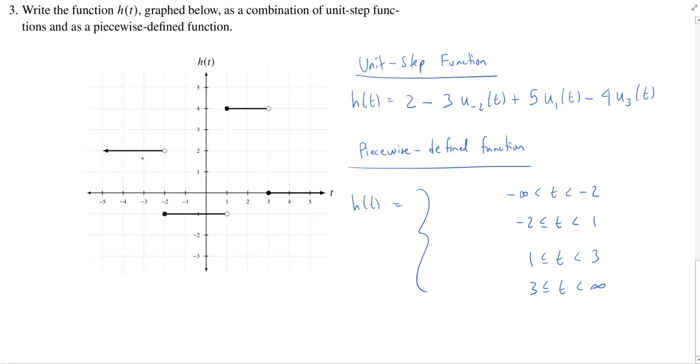Now it's just a matter of asking what are the values on these specific domains. So from negative infinity to negative 2, the output is 2. From negative 2 to 1, the output is negative 1. From 1 to 3, the output is 4. And finally from 3 to infinity, the output is 0.